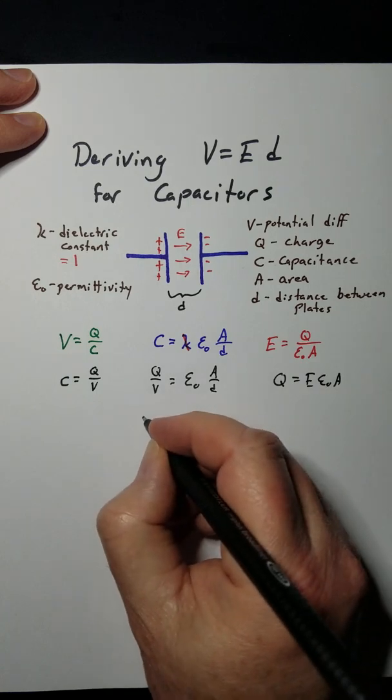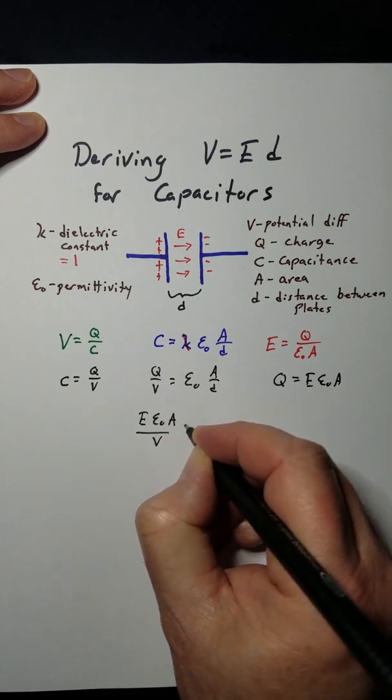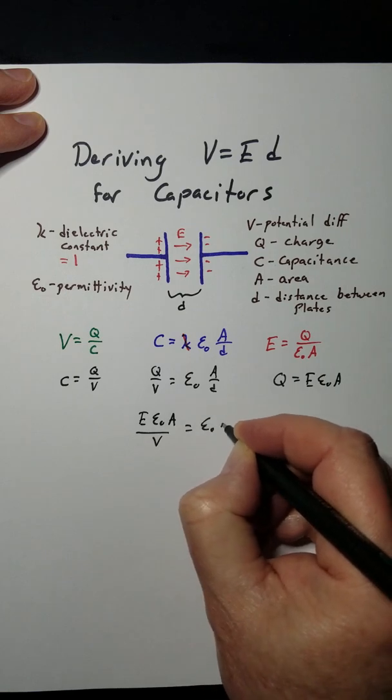And Q is this, so that's E epsilon naught A over V equals E epsilon naught A over D.